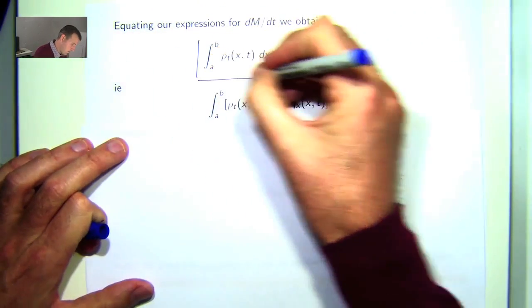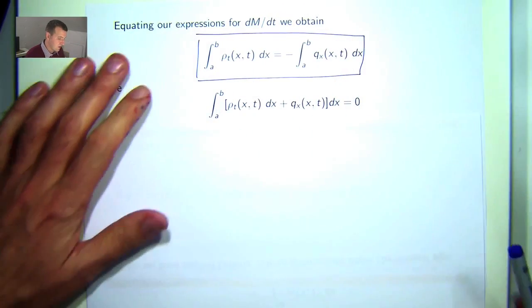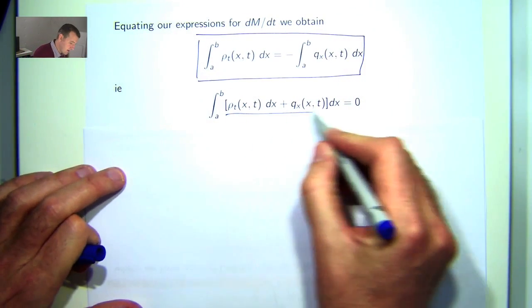So if I equate them, I get the following. And then if I just rearrange and put them all under one integral sign, I get this.